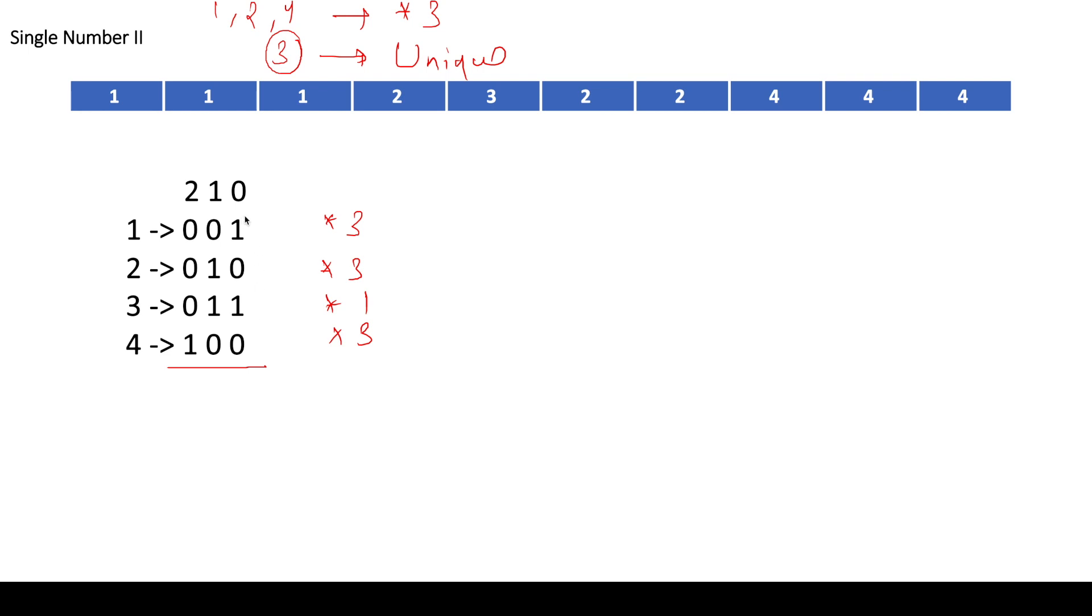Now what I want to do is, I want to sum the 0th bit for all the numbers. And similarly, I want to sum all the 1th bit and all the 2th bit. So let us do this thing. So for 1, this is 1. So it is present three times.